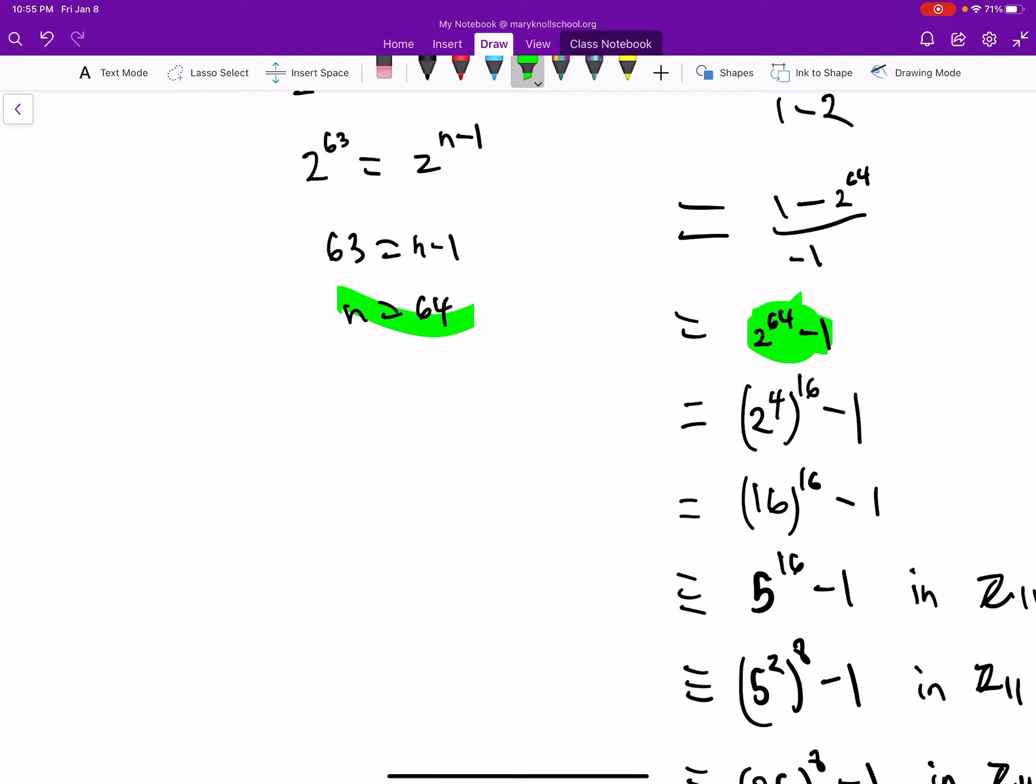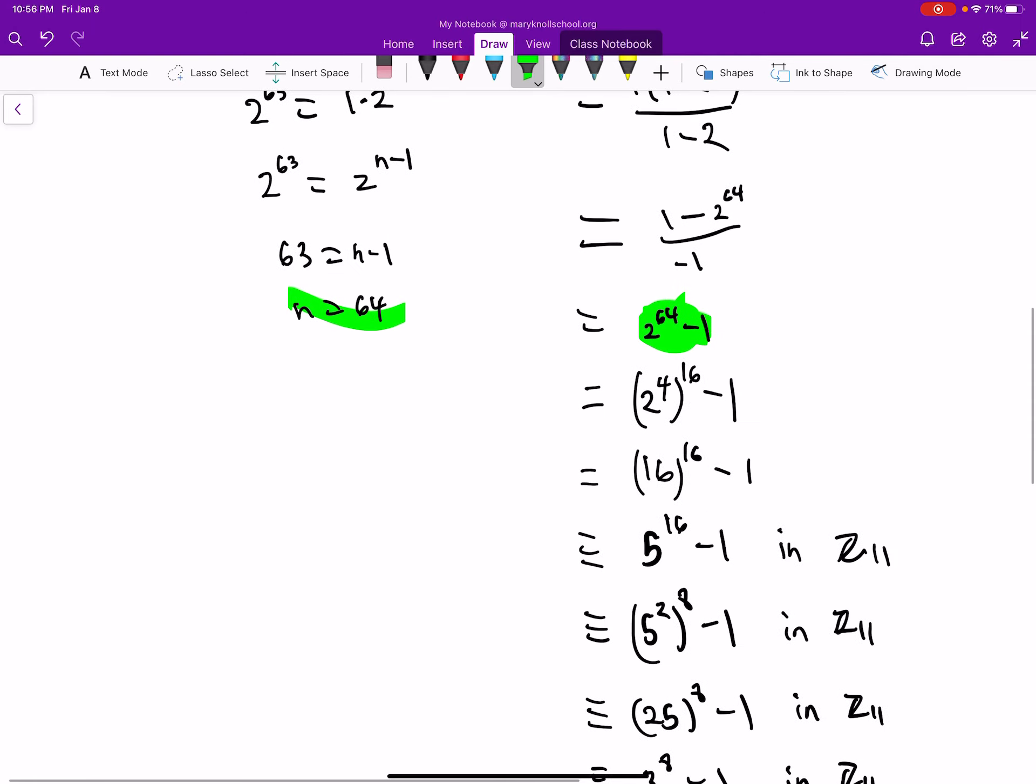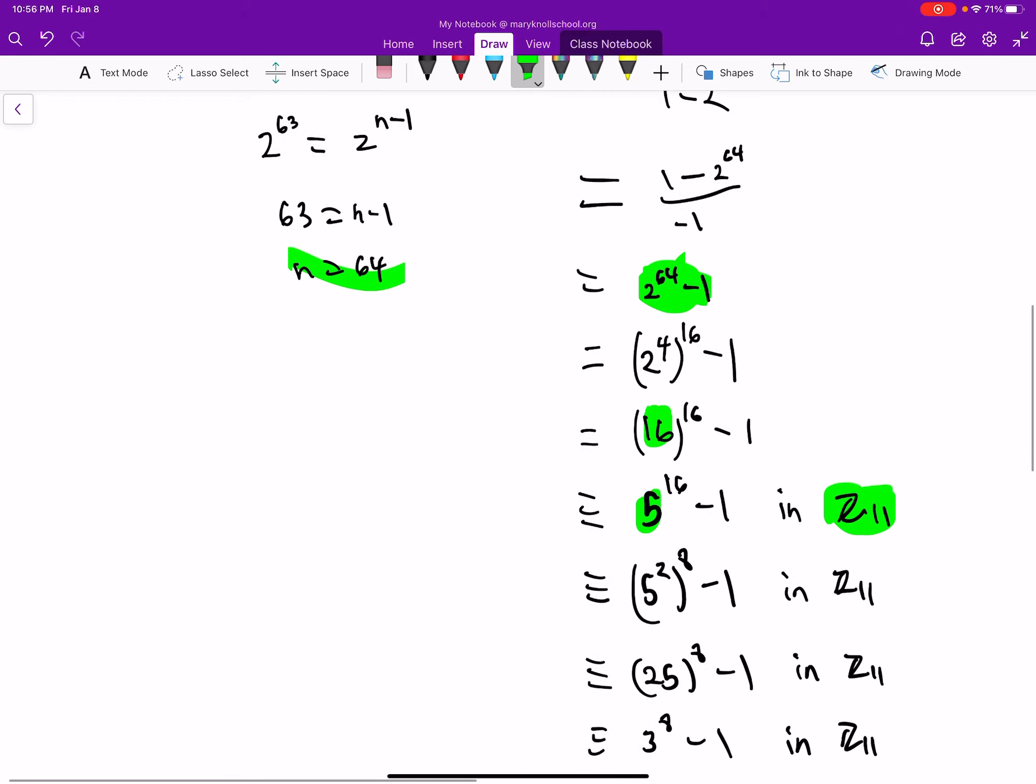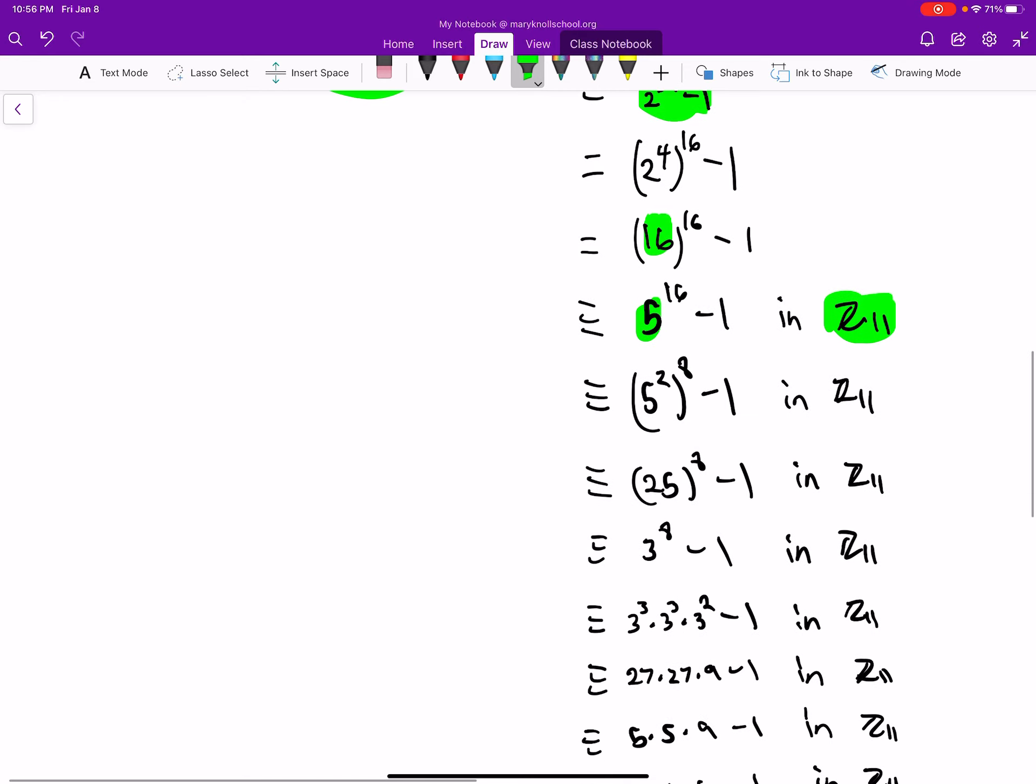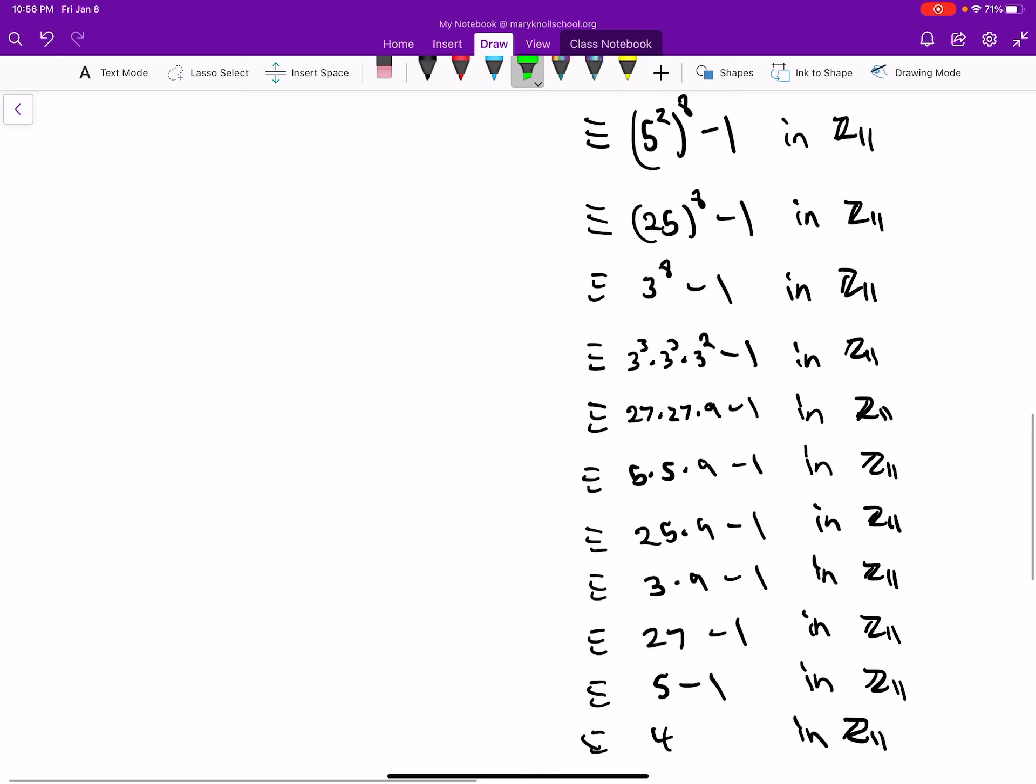And then from this point, I start using some techniques to try to reduce it down. And then I start using mod 11 to reduce it even further. For example, 16 is 5 in mod 11, and then I just continue this pattern until you get 4.